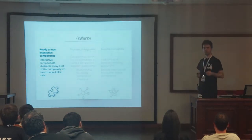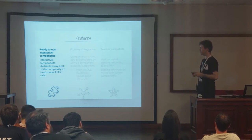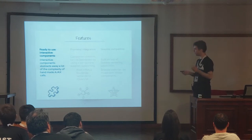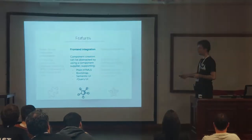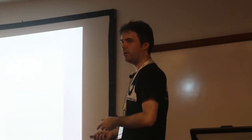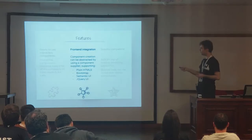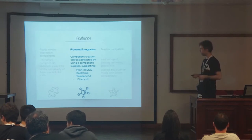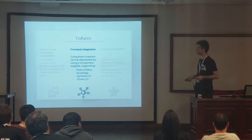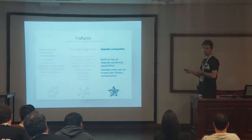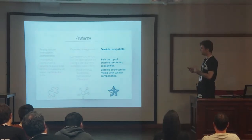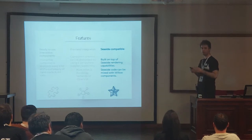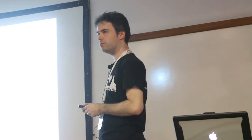There are a lot of features, some were shown in the previous talks. You have ready-to-use components that directly handle the complexity of HTML code. You have front-end integration with different products. If you download just the base Willow project, you get plain HTML5, but you can download Willow-Bootstrap and create Bootstrap applications, Semantic UI, jQuery UI, and other projects. These are quite finished and most have around 100% test coverage. And of course, it's Seaside compatible. This is on top of Seaside, but we have added in the last year some extensions to Seaside objects, so you can mix and match, maybe if you don't want to use all the Willow components.